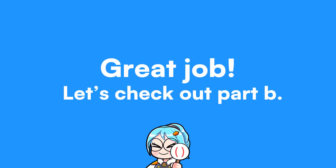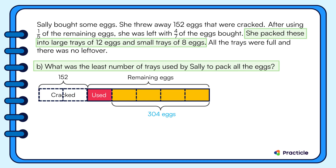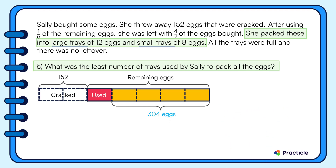Now let's look at Part B: what was the least number of trays used by Sally to pack all the eggs? We know Sally packed 304 eggs into large trays of 12 and small trays of 8. To use as few trays as possible, we should use more large trays. Let's try dividing 304 by 12 first to see if all eggs can be packed into trays of 12.